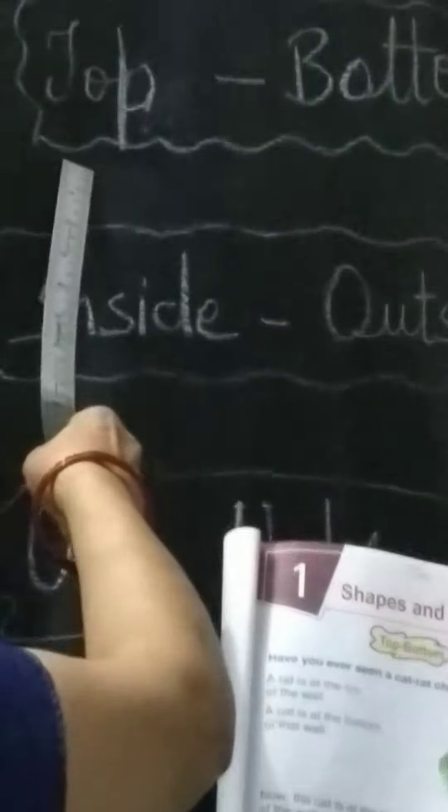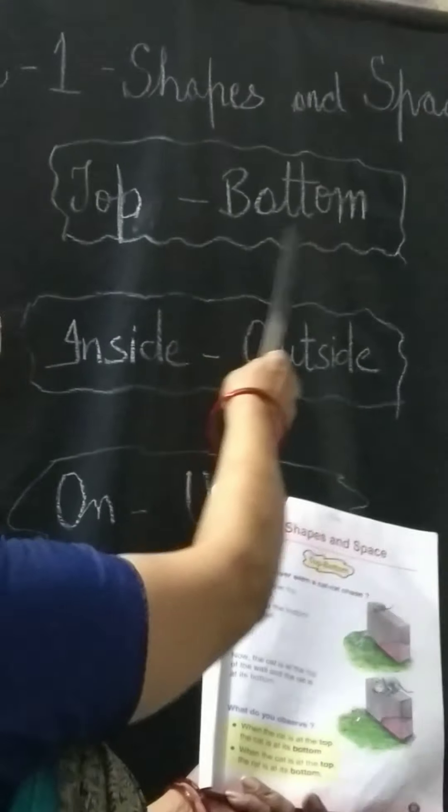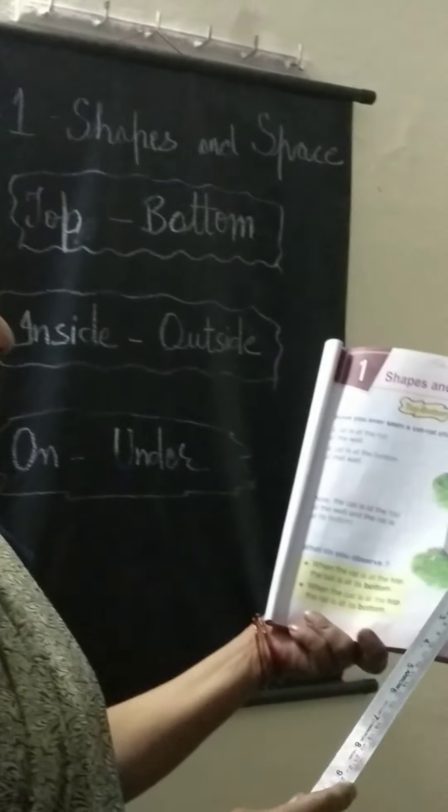Rat top ane upar, bottom ane neechhe. Top means sabse upar, bottom means sabse neechhe.